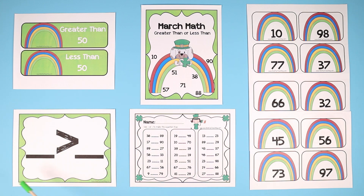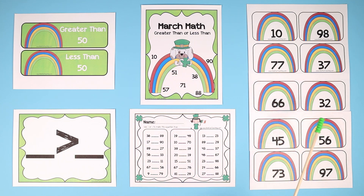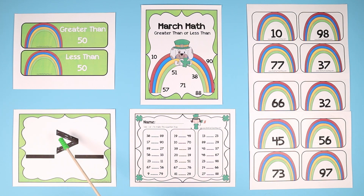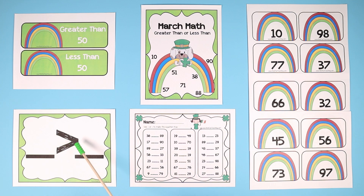It also comes with this greater than placemat board where, let's say they draw two of the flashcard numbers, they have to put the bigger number on the left and the smaller number on the right. One of the tips is you can tell the kids that this symbol right here is an alligator, and the alligator always opens its mouth to the bigger number — the alligator is always hungry for the big number.